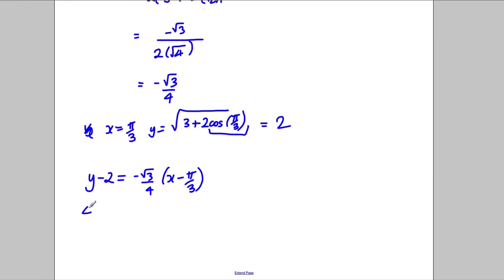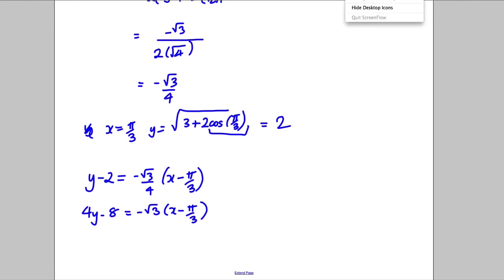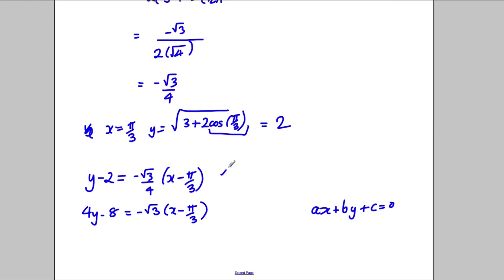I could simplify further by multiplying everything by 4 if I wanted, but leaving it in the form y - 2 = (-√3/4)(x - π/3) is absolutely fine in the exam and should get full marks, unless they specifically ask for a particular form.